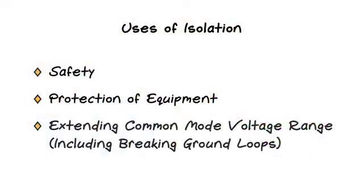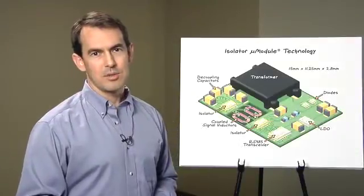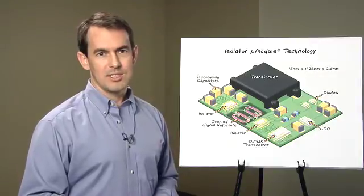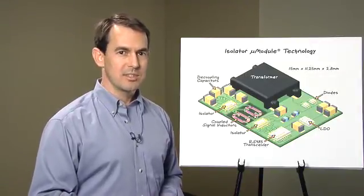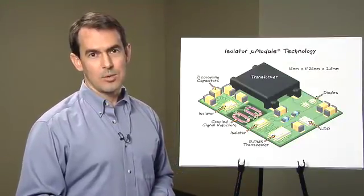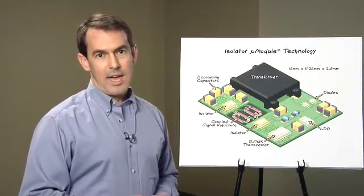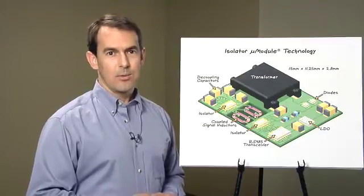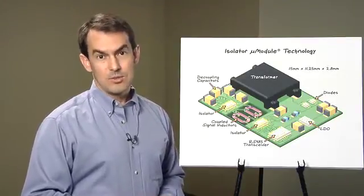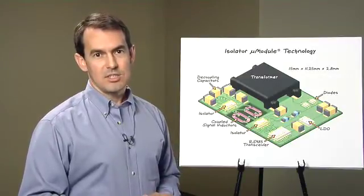The three uses of isolation are safety, protection of equipment, and extending the common mode voltage range, which may include breaking ground loops. Often overlooked are additional benefits which improve communication performance. RS-485 is a differential signaling interface well suited to long distance communication, and the standard was designed to handle a plus minus 7 volt ground difference. Adding the isolation of the LTM 2881 greatly extends the common mode operating range from 7 volts to nearly 4000 volts peak while maintaining communication.